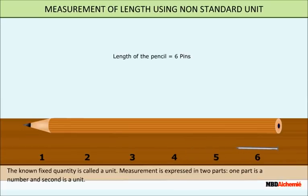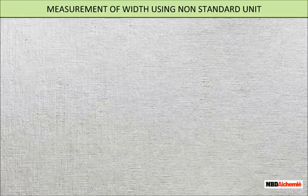Thus, measurement means the comparison of an unknown quantity with some known quantity of the same kind. The known fixed quantity is called a unit. Measurement is expressed in two parts: one part is a number and the second is a unit.